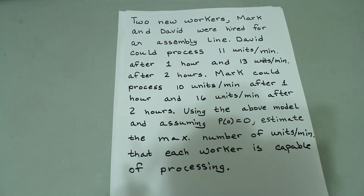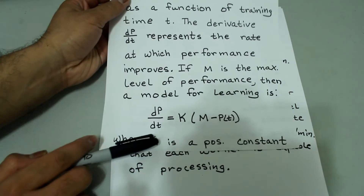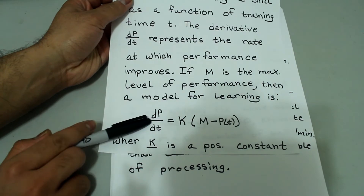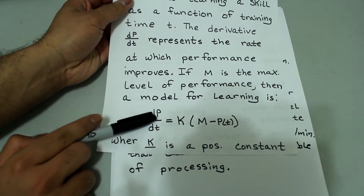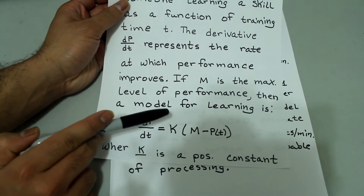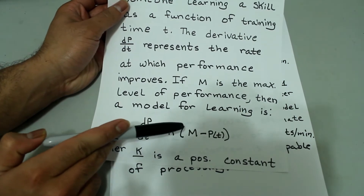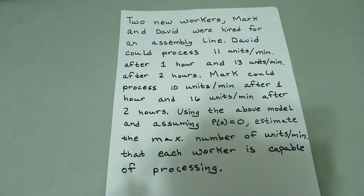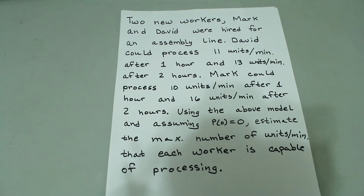When it says above model, it's just referring to dp/dt equals k times m minus p of t. I'm only going to do the calculations for Mark because it comes out to a whole number without any decimals. David will be done the same way just with different numbers — I don't want to make the video too long or confusing.